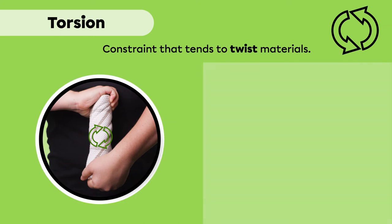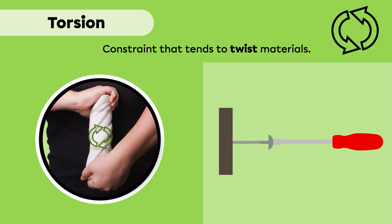We therefore represent torsion with this symbol. There is also a torsion constraint on a screwdriver when tightening a screw. The hand applies a force that turns the screwdriver in one direction, while the screw, which resists this force, applies a force in the opposite direction.